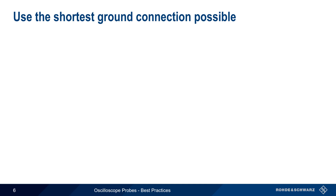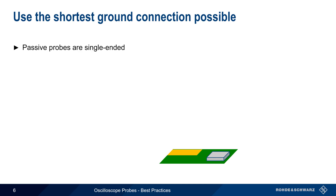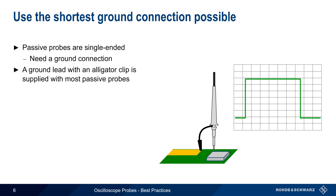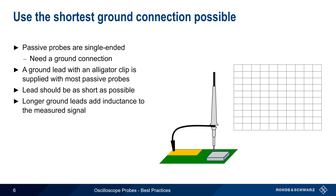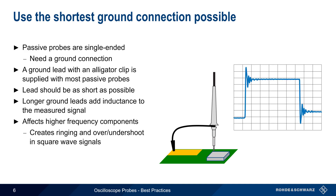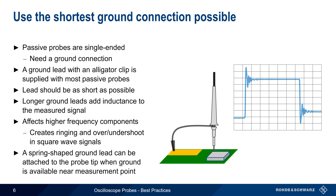Another important tip when using passive probes is to use the shortest ground connection possible. Passive probes are single-ended, which means they measure voltage relative to ground, and thus need a ground connection. This ground connection is usually made via a ground lead with an alligator clip, but it's important to keep this lead as short as possible. Longer ground leads add inductance to the measured signal, which affects higher frequency components and can lead to ringing and over- and undershoot in square wave type signals. When a ground point is available near the measurement point, a slip-on spring-style ground lead can be used to minimize the length of the ground connection.